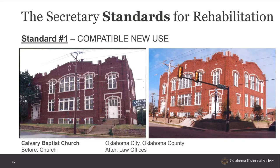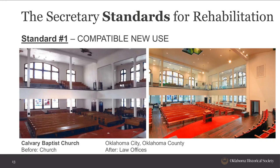The Calvary Baptist Church in Oklahoma City is a unique example — historically a church, it was rehabilitated into law offices. Through the careful use of glass wall partitions, we were able to subdivide the space while still maintaining the open-air volume that was historically significant to this space.